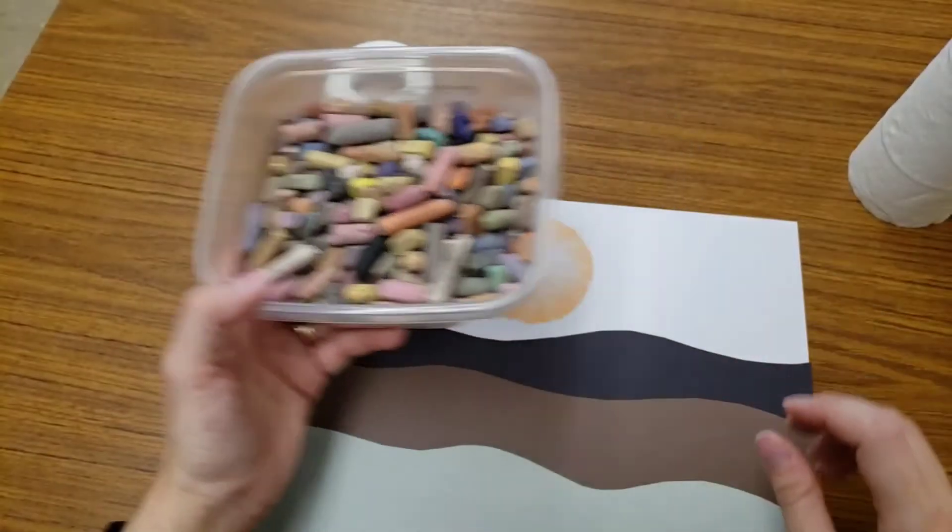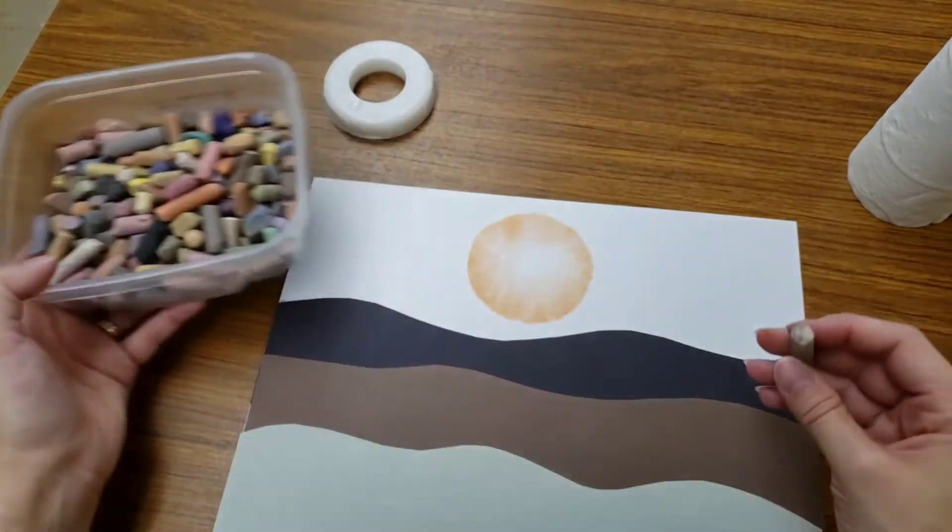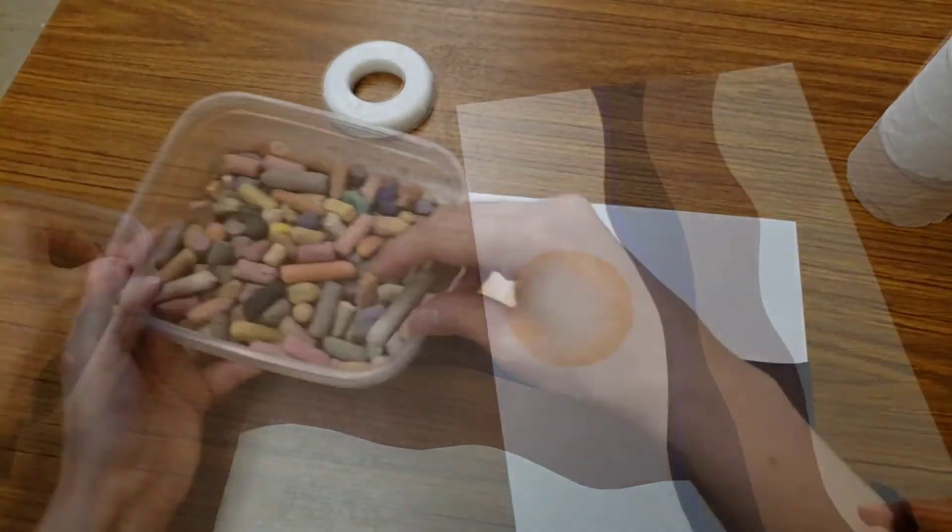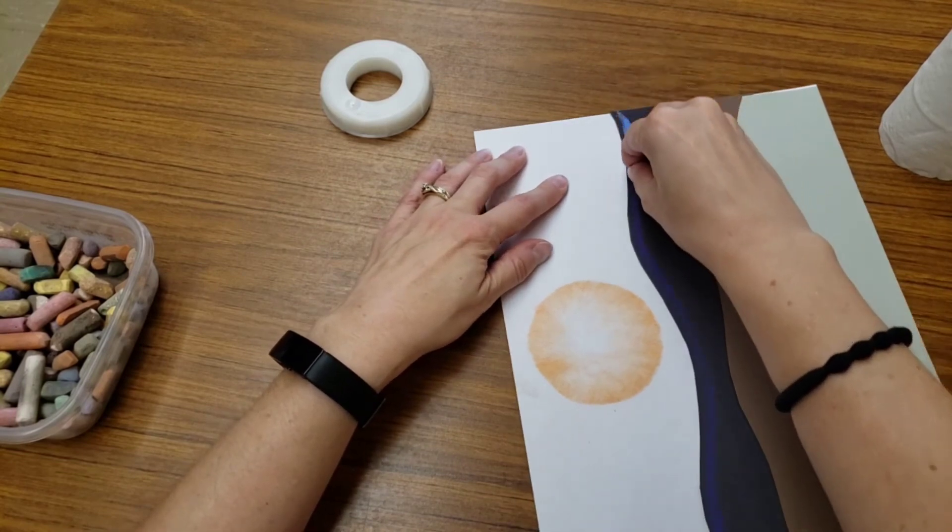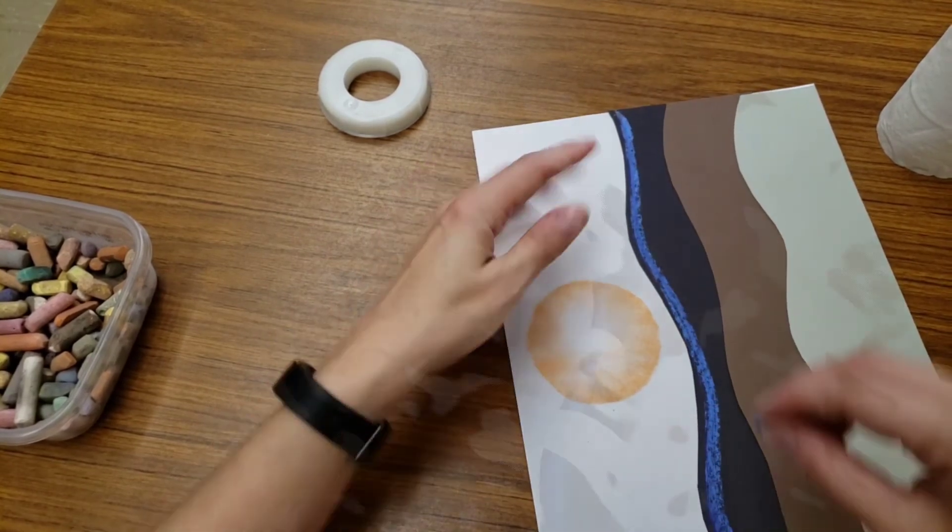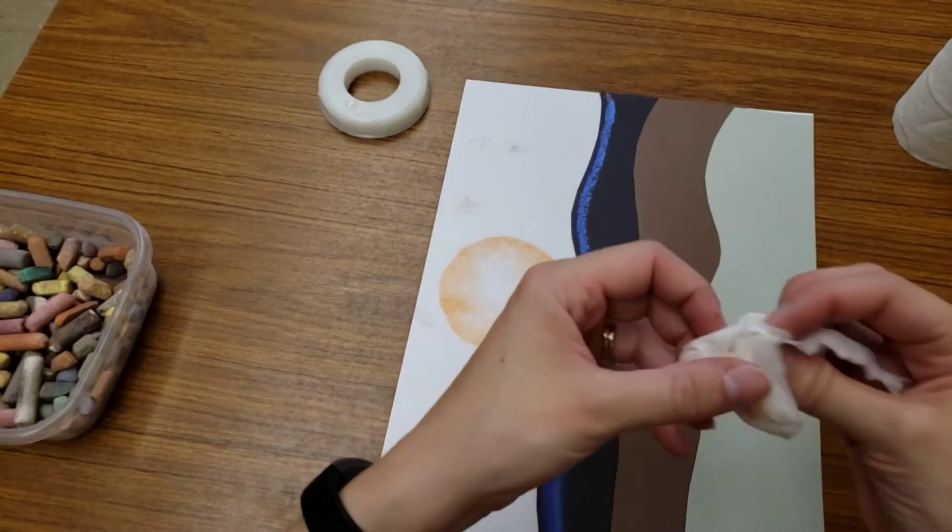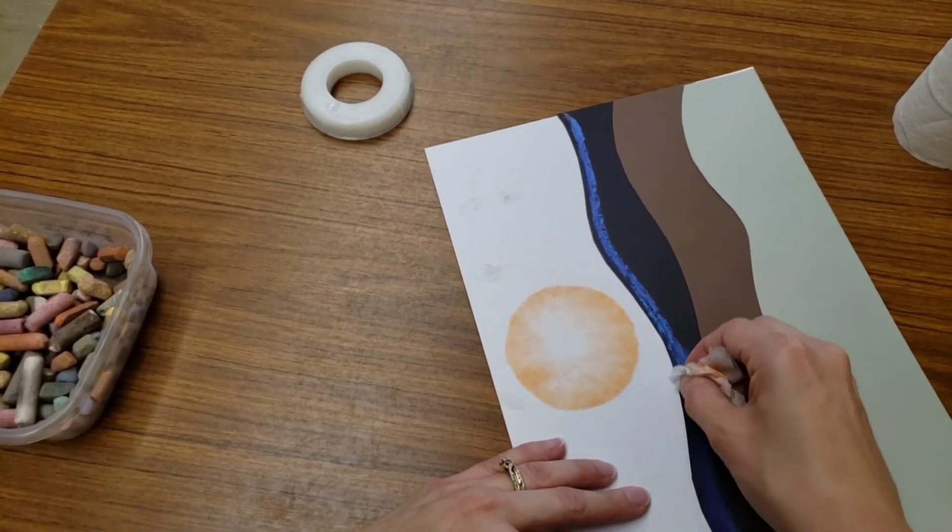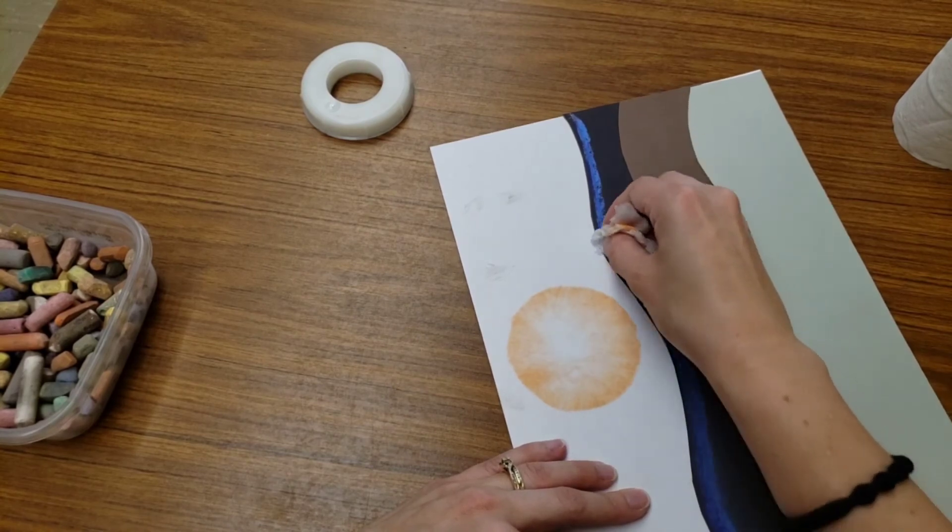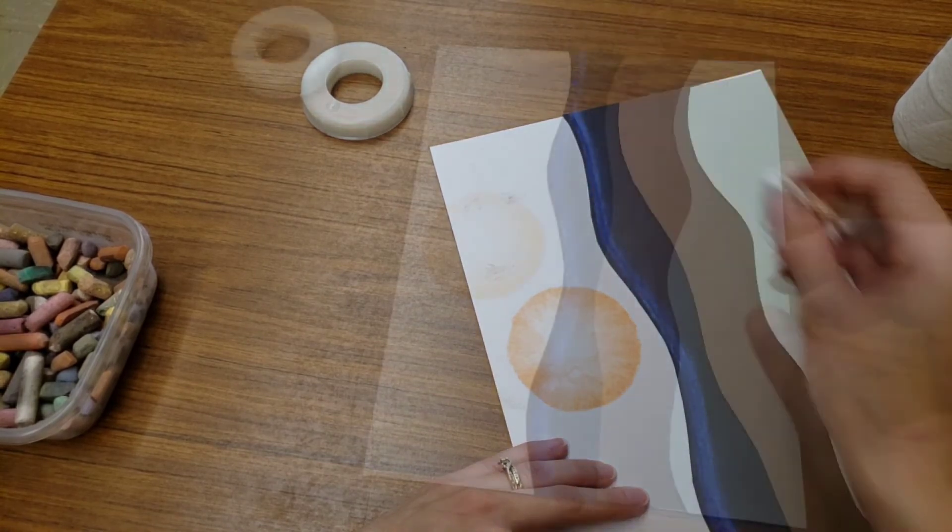Next, we can take some chalk again and pick whatever color you would like. I'm going to take your chalk and carefully trace the top of one of your hills. You can take your tissue and rub the chalk.